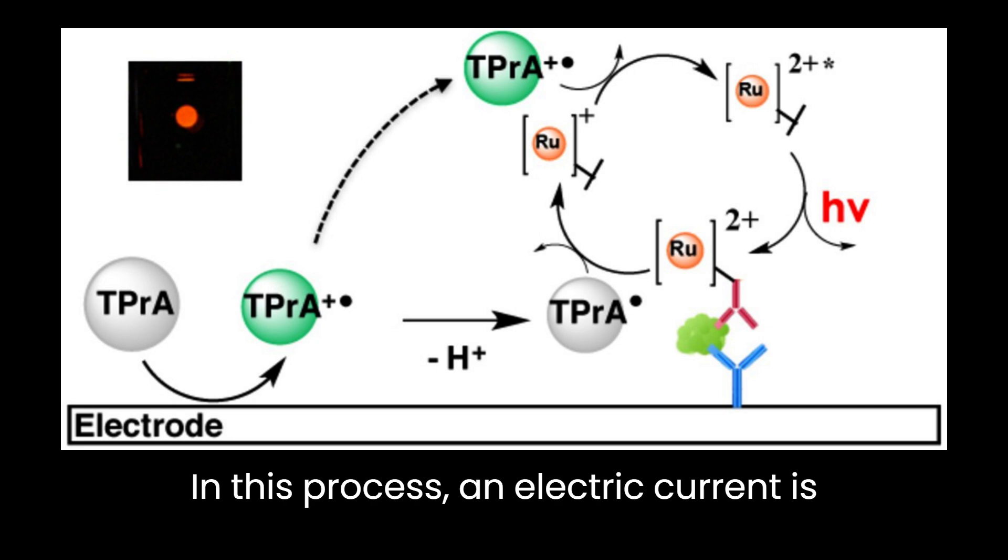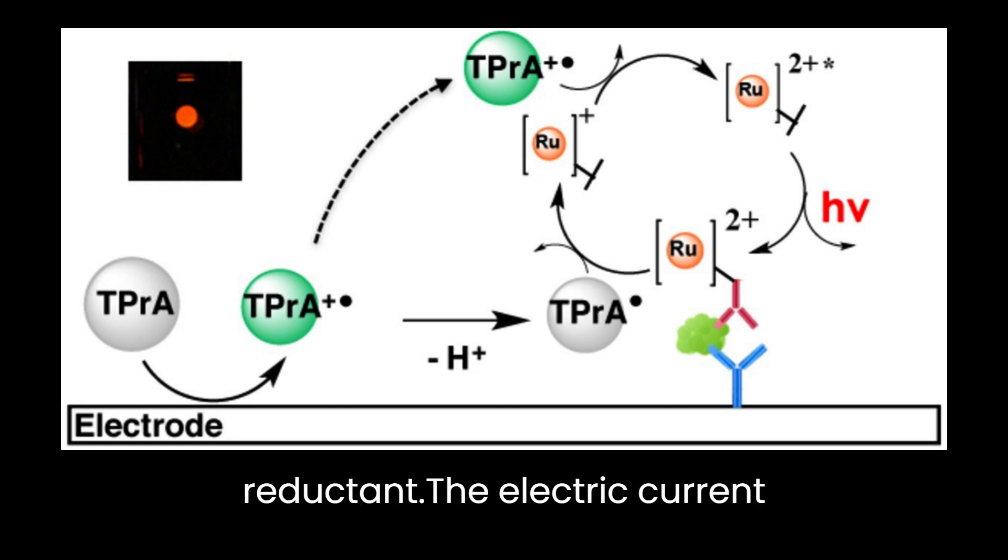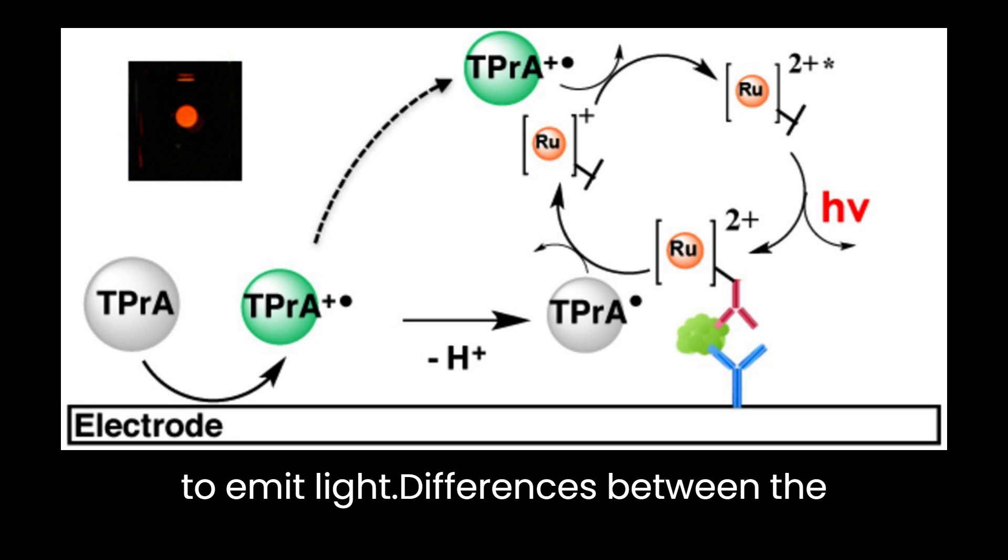In this process, an electric current is applied to a solution containing a luminophore (a molecule that emits light) and a reductant. The electric current causes the reductant to reduce the luminophore, exciting it and causing it to emit light.